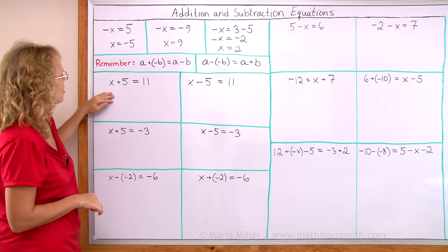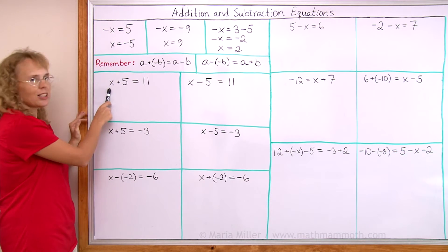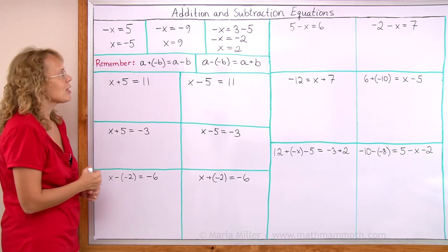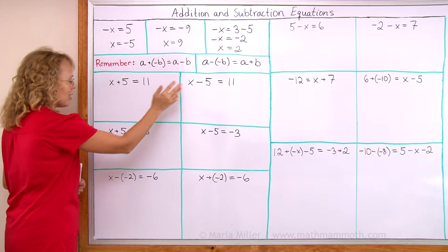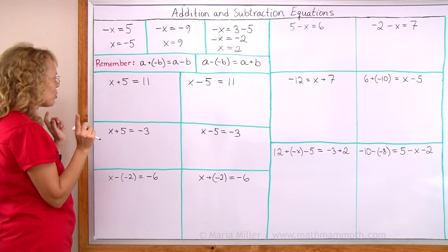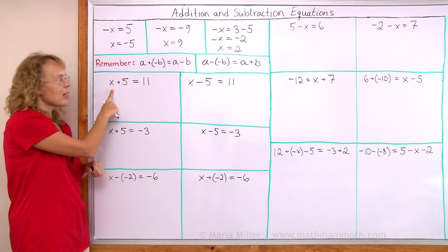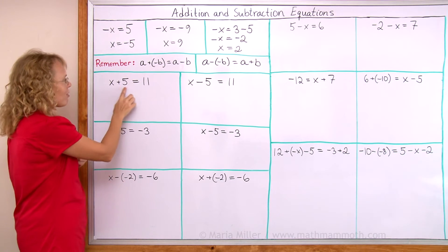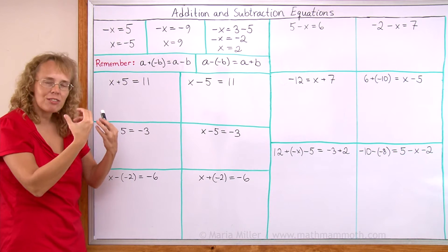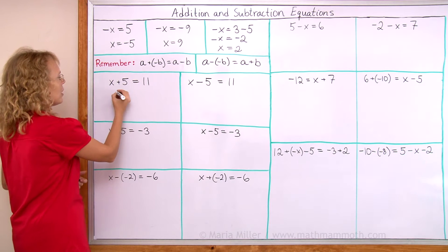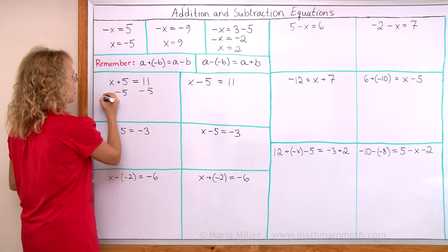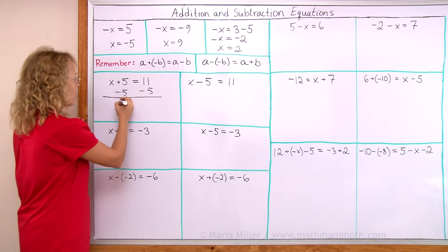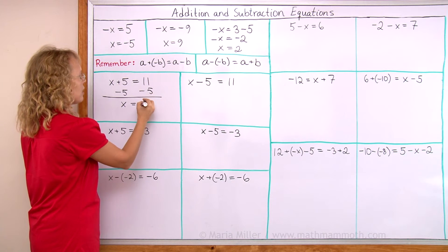Let's start with the simplest equations. You can see the solution to x plus 5 equals 11 is 6, but we need to learn the mechanics of equation solving. I want to have x alone on the left side, so I need to get rid of the plus 5. I'll subtract 5 from both sides of the equation. X plus 5 minus 5 leaves x alone, and on the other side 11 minus 5 is 6.